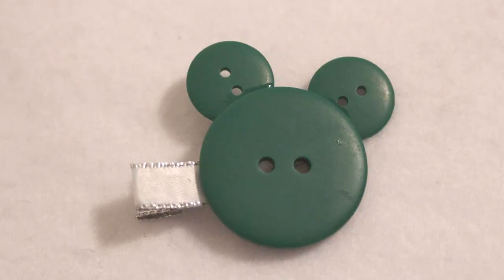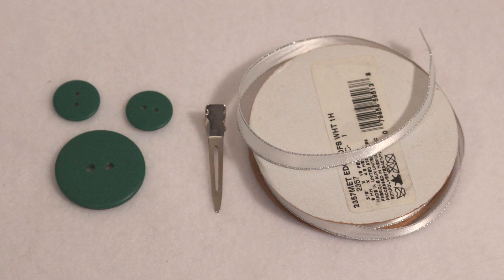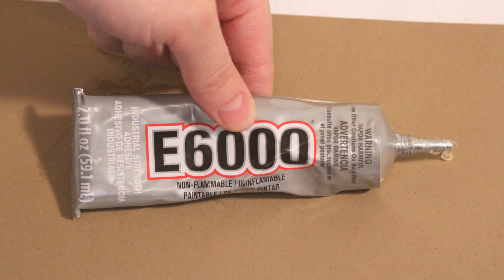The first hair clip is Mickey inspired so you need three circle buttons, a hair clip, and some ribbon along with the glue of your choice. I'm using E6000 because it's what was handy.